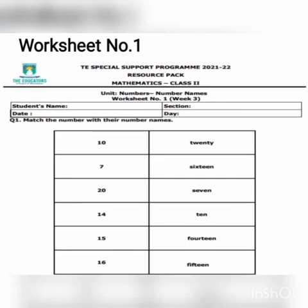Worksheet number one. First, students, write your name here and section, and then write the date and day. You can see question number one: match the number with their number names. You can see in the first column the numbers are given, and in the second column number names are given. You match these numbers with their number names.